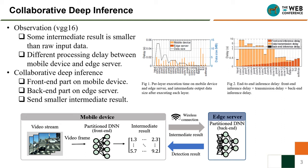From Figure 1, we can see two main observations of DNN processing. First, some intermediate results are smaller than the raw data. Second, the mobile device and edge server have different processing delays. With these two observations, collaborative deep inference is proposed to speed up DNN processing.